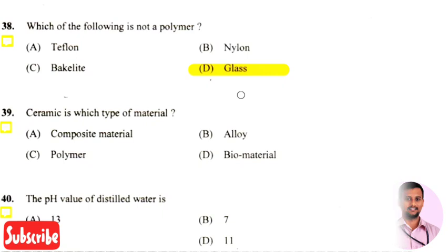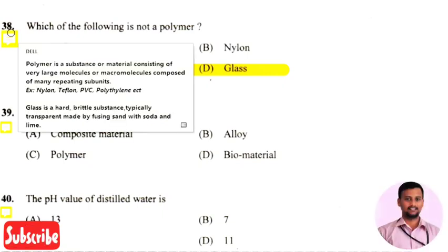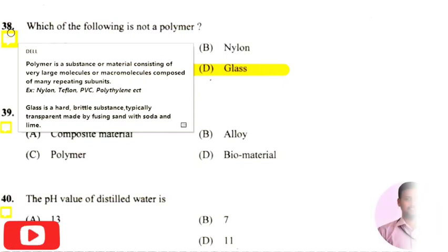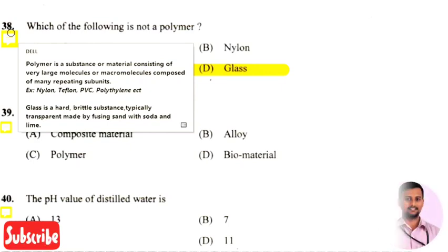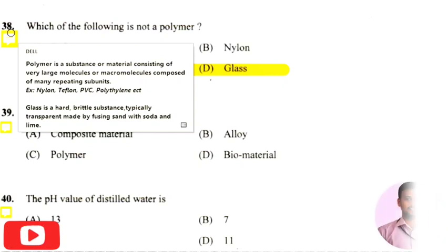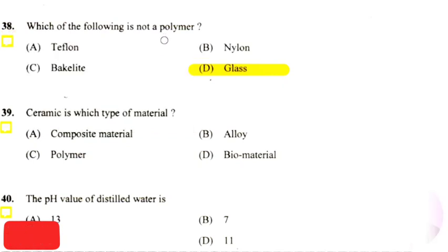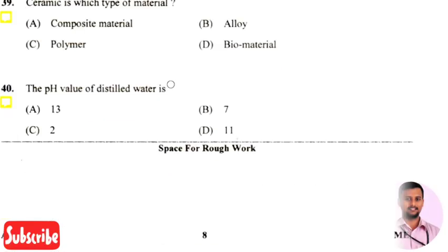The next question is: which of the following is not a polymer — the right answer is option three, that is glass. Polymers are substances or materials consisting of large molecules or macromolecules composed of many repeating subunits. Examples of polymers include nylon, Teflon, PVC, and polythene, whereas glass is a hard brittle substance typically transparent, made by fusing sand with soda and lime, so glass is not a polymer.